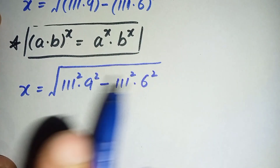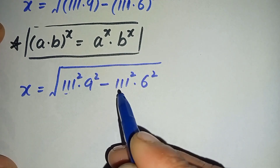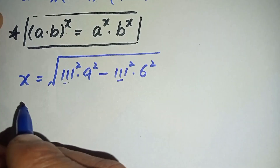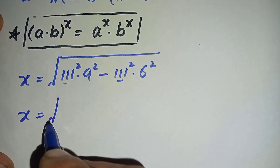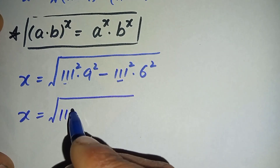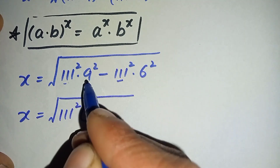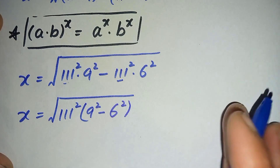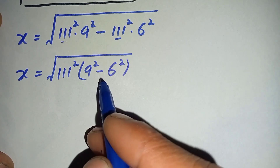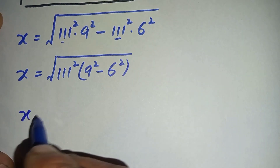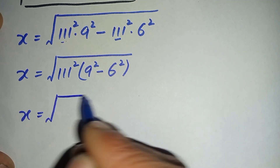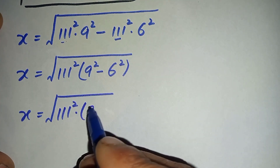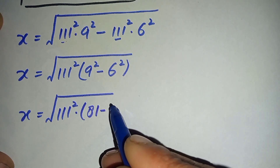Now look into both the terms. In both terms 111 squared is common, so let us take 111 squared as common from both terms. It will become x is equal to square root of 111 squared, times the quantity 9 squared minus 6 squared. That is 81 minus 36.